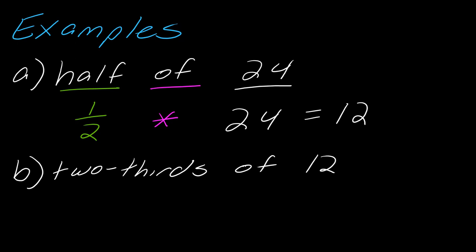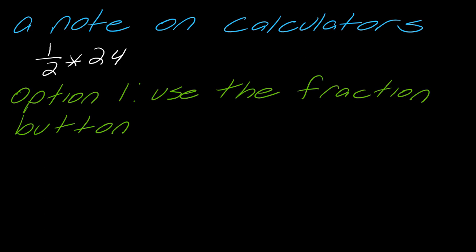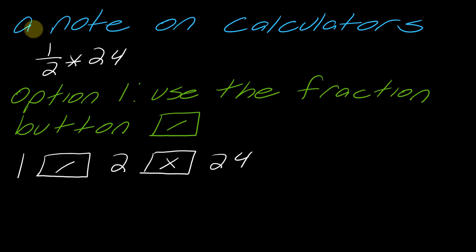Before going further, let's talk about how to enter a calculation like this on your calculator — for this exam, I'm assuming you're using a contractor's calculator. There is a fraction button on those calculators. To enter one-half, you'd press 1, then the slash button, then 2 — this gives you one-half — and then times 24. Pause the video to make sure you feel comfortable doing that, and you should get 12.